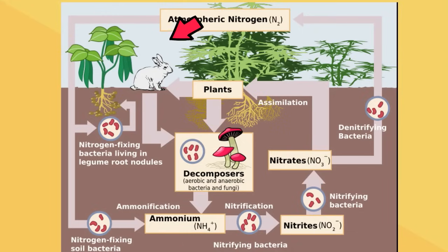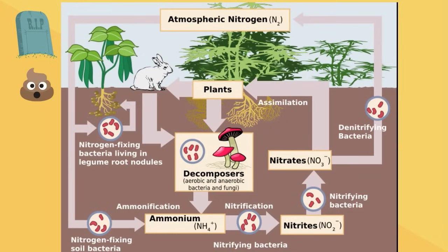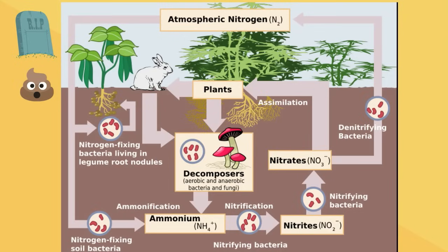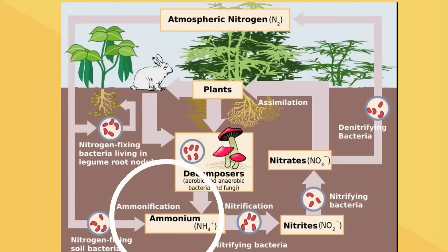Also, once an animal eats the plants, the animal either dies or needs to get rid of waste. Another type of bacteria, along with decomposers, breaks down the nitrogen in the waste or the dead animal. Through a process called ammonification, the nitrogen can enter the cycle once again at nitrification.